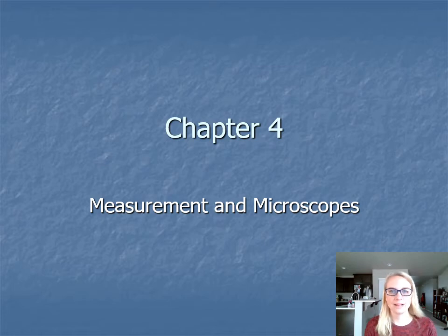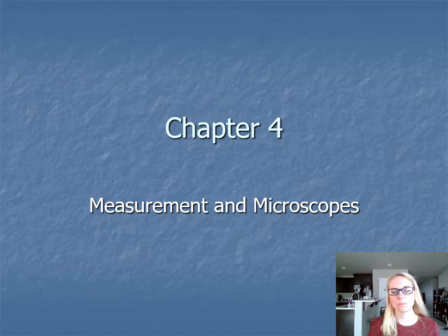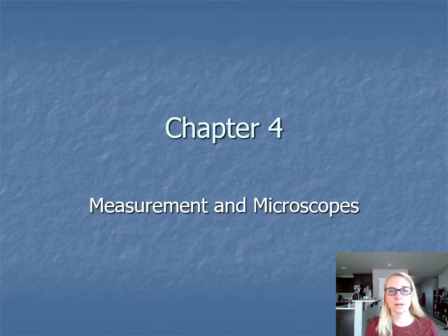Hello, welcome back. This is our Chapter 4 series of mini lessons. Chapter 4 is an interesting collection of topics — it starts with metric measurement and microscopes, then moves on to staining bacteria, and wraps up with classification mechanisms for microorganisms. Those are the three topics in this lecture section.